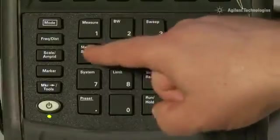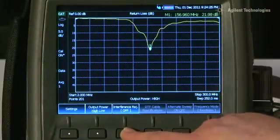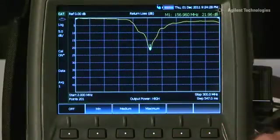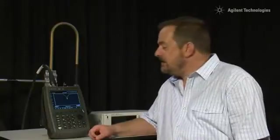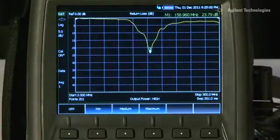On the FieldFox, under the Measurement Setup button, there is a special feature called Interference Rejection. Turning on the Interference Rejection minimizes the chance of having erroneous responses on your return loss or VSWR traces.